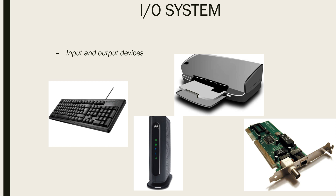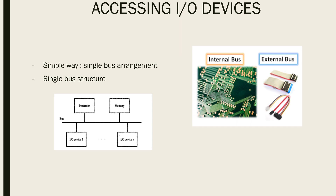The simplest way of connecting I/O devices to a computer is to use a single bus arrangement. A bus is a shared communication system that transfers data between components inside a computer or between external components — that's why you have internal buses and external buses. This bus necessarily includes hardware components like wires or optical fibers, as well as software consisting of communication protocols.